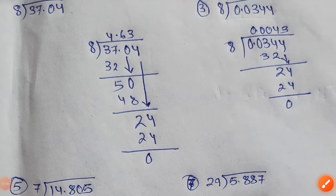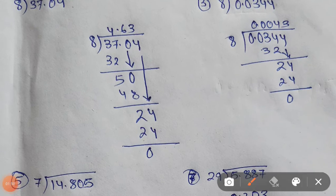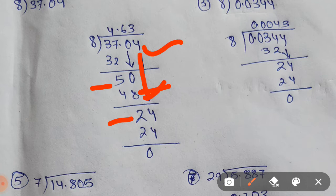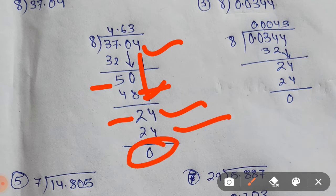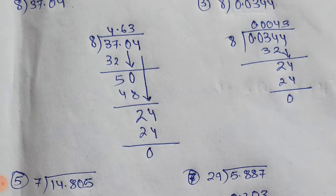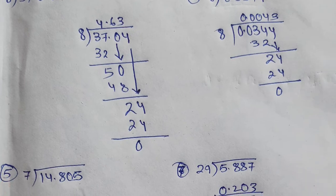We will try to find out a number closer to 50 or equal to 50. In the table of 8 we do not have 50 but we have a number closer, that is 48, because 8 times 6 is 48. Now subtract 48 from 50, your answer will be 2. We have a 4 left here, we will bring this 4 down and the number will become 24. Now 8 times 3 is 24, so 24 minus 24 is 0. So you got the answer as 4.63.